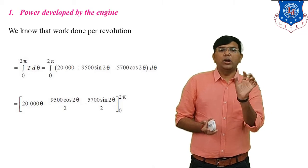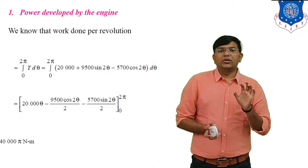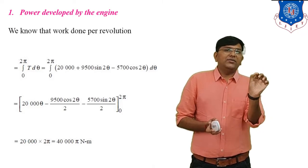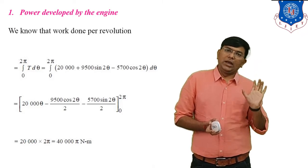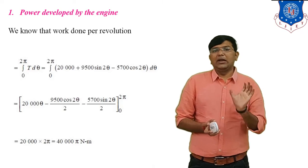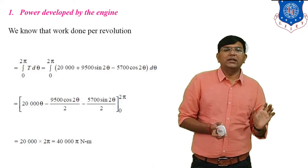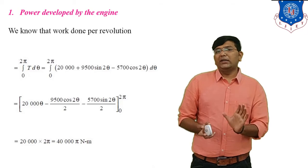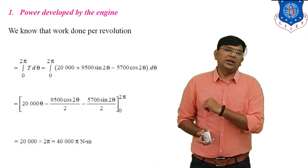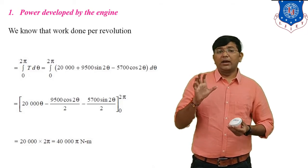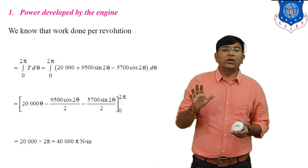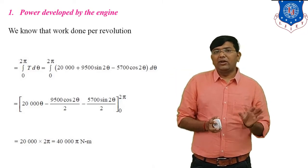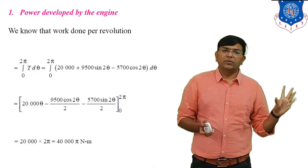Now put in the upper and lower limits from 0 to 2π. The cosine and sine terms cancel out when evaluated over a full cycle. The result gives 20,000 times 2π, which equals 40,000π Newton-meters. So work done per revolution equals 40,000π N·m.